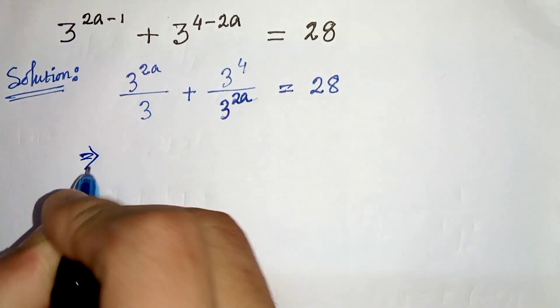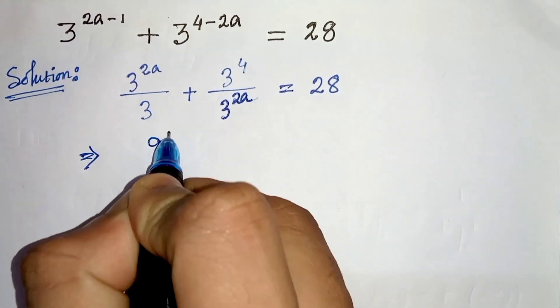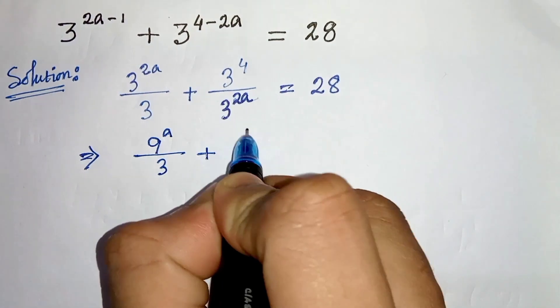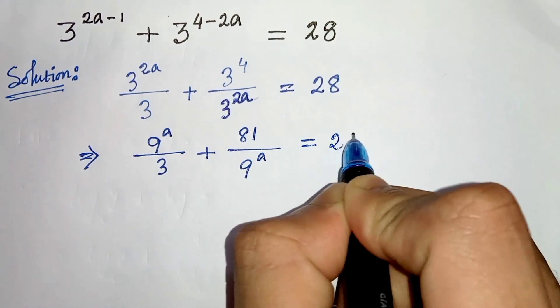Now in the next step we can write 3 to the power 2a as 3 squared, that is 9, 9 to the power a divided by 3, plus 3 to the power 4 is 81 divided by 9 to the power a equals 28.